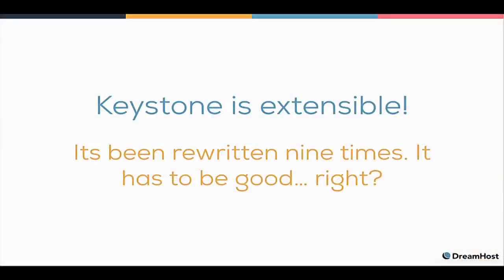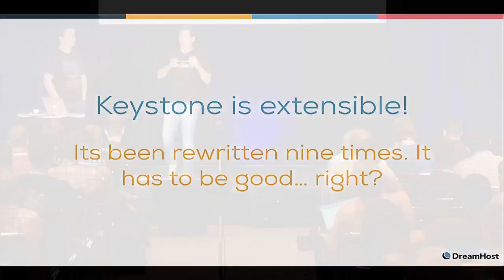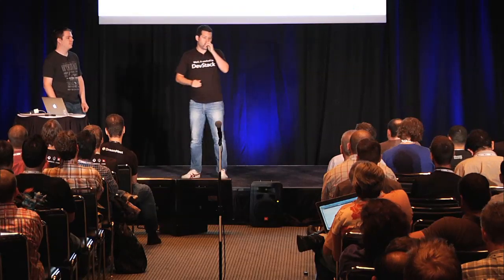We wanted to do integrated authentication using the Keystone plugin infrastructure. It turns out it's not exactly there for this purpose and doesn't work particularly well for our use case. Also, it changes from release to release in breaking ways. Keystone is very central to all of OpenStack — if you make Keystone slow, you've made your entire OpenStack installation slow. We did get it working, but we have a solution to this one — a funny one, we'll get there.